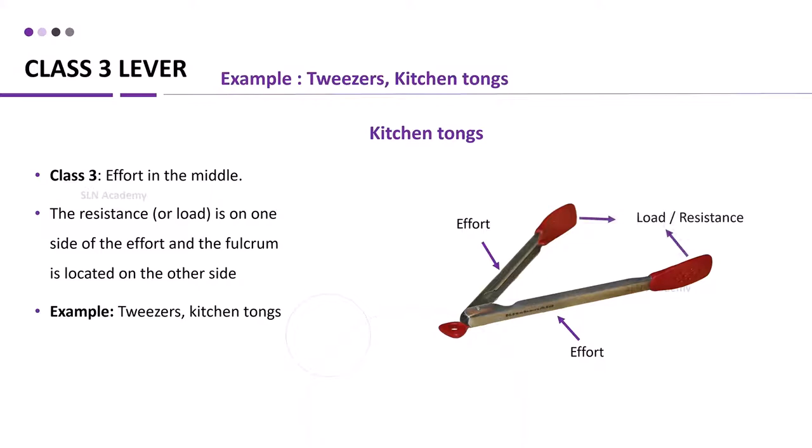Class 3 lever. Effort is in the middle. The resistance is on one side of the effort and the fulcrum is located on the other side. Example, tweezers, kitchen tongs.